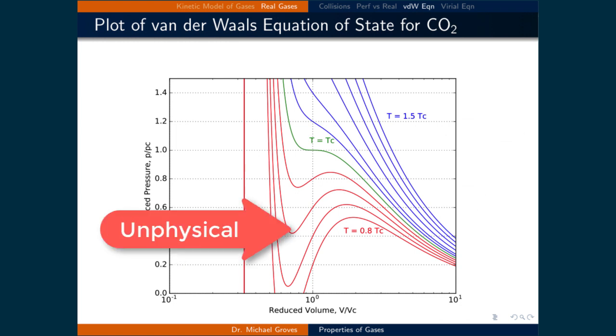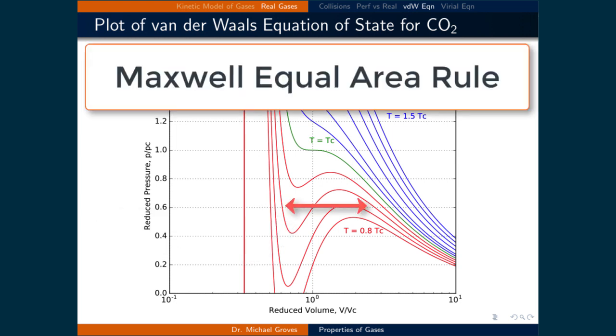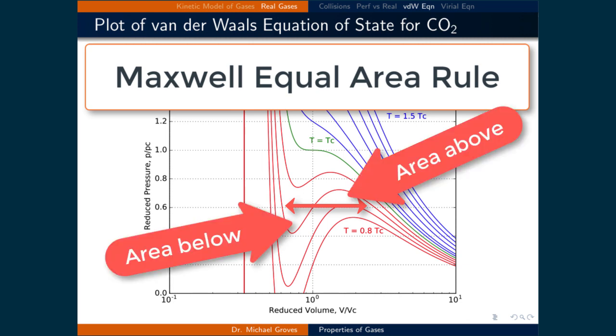For isotherms with temperatures less than the critical temperature, those drawn in red, there is a decrease in pressure as the volume drops. This is not physical. Instead, we apply the Maxwell equal area rule to denote the phase change. To apply this rule, we draw a straight line across the isotherm such that the area above is the same as below the line. This is how we regain the experimentally observed pressure versus volume plot seen previously.